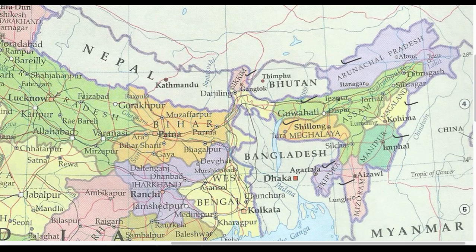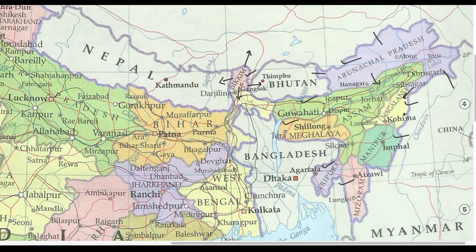The seven sister states of Northeast India are Arunachal Pradesh, Assam, Meghalaya, Tripura, Mizoram, Manipur, and Nagaland. Starting with Sikkim: Sikkim shares borders with West Bengal only, and has international borders with Bhutan, China, and Nepal. Moving on to Arunachal Pradesh: it has borders with Assam and Nagaland, and international borders with Bhutan, China, and Myanmar.